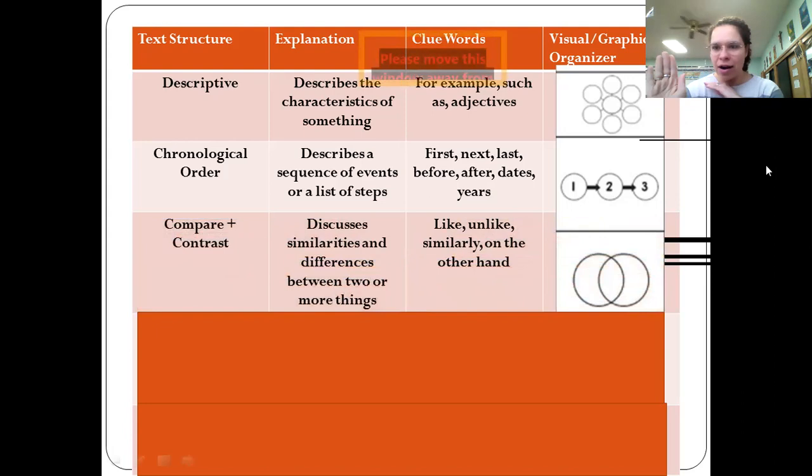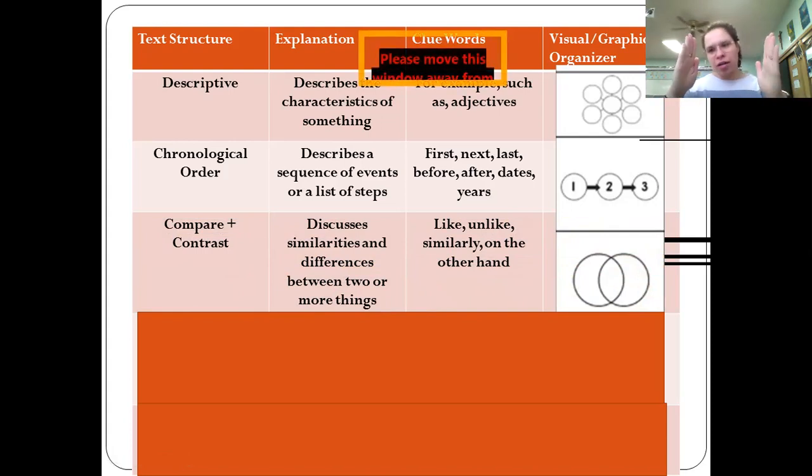The third one is where you compare and contrast. This graphic organizer probably looks very familiar to you—the Venn diagram. On one side you describe one thing, on the other side you describe another, and in the middle you describe the things that they share, the characteristics they share.